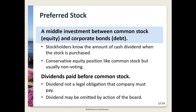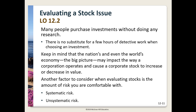Preferred stock is a hybrid — it's sort of like common stock in that it pays a dividend, but it's really more like a bond in that the dividend is typically fixed. Preferred stock has no maturity date and no voting rights. Preferred stock dividends are paid before common stock dividends but may be skipped. Most preferred stock today is cumulative, meaning any skipped dividends must be caught up before any dividends can be paid to common shareholders.